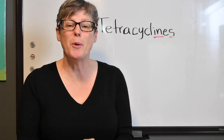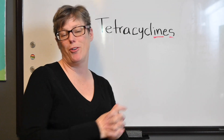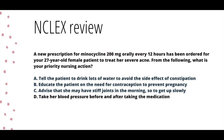Now for an NCLEX question. A new prescription for minocycline 200 mg orally every 12 hours for a 27-year-old female patient to treat severe acne. What would be a priority nursing action? A) Tell the patient to drink lots of water to avoid constipation. B) Educate the patient on the need for contraception to prevent pregnancy. C) Advise she may have stiff joints in the morning, so to get up slowly. D) Take her blood pressure before and after the medication.